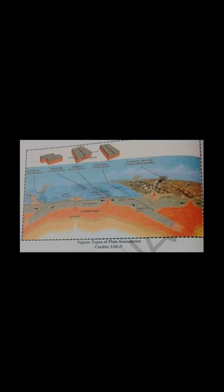Plate tectonics theory forms the core of the modern geological paradigm that helps explain many seemingly unrelated geological phenomena. It provided a uniform context for understanding mountain building processes, volcanoes, and earthquakes, as well as the evolution of Earth's surface and reconstructing its past continents and oceans. The formation of most of the major landforms can also be satisfactorily explained using plate tectonic theory.